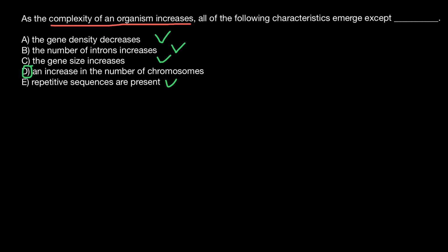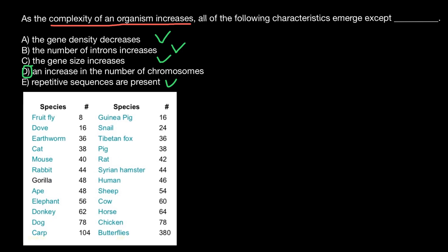As for the increase in the number of chromosomes, let's return to our question. As the complexity of the organism increases, all of the following characteristics emerge - so this characteristic doesn't emerge. If you don't believe me, take a look at this table. You'll see that the human genome consists of 46 chromosomes, but butterflies, for example, have 380 chromosomes - almost 5, 6, 7 times greater than humans.